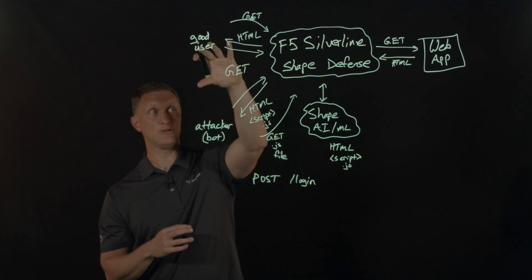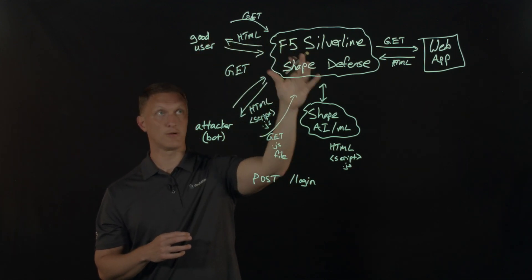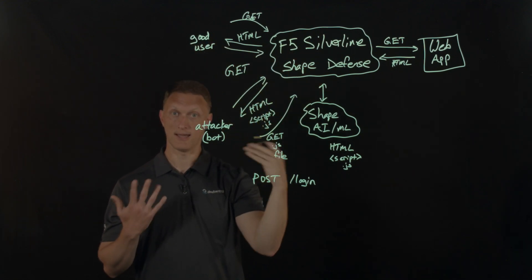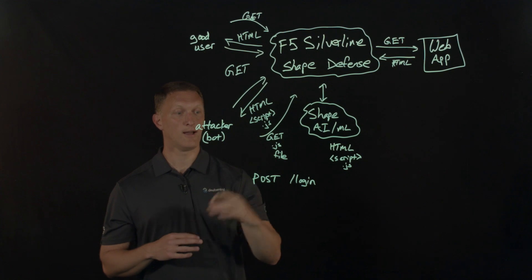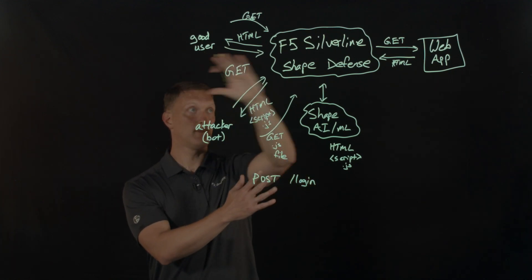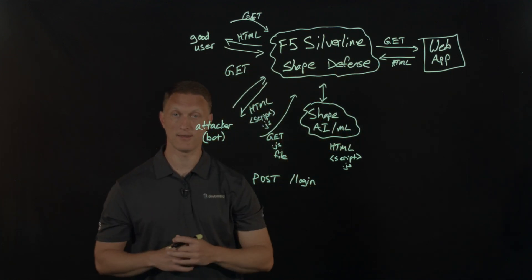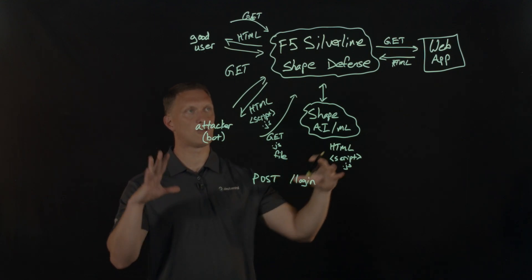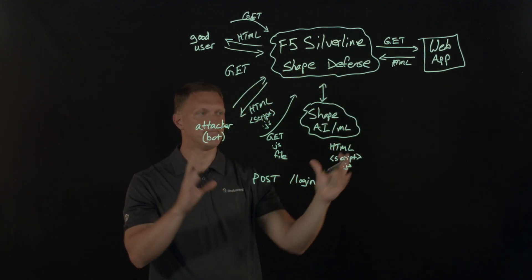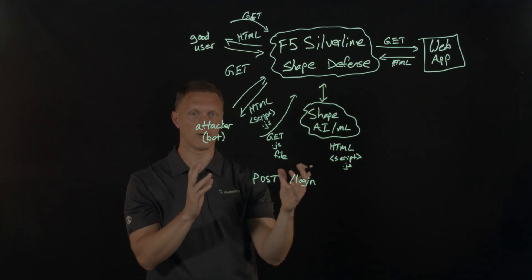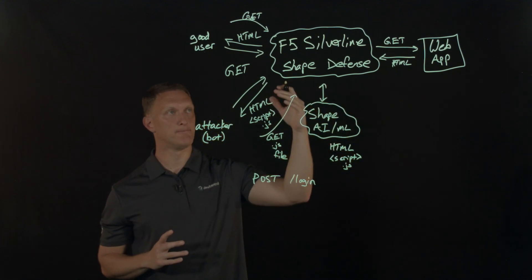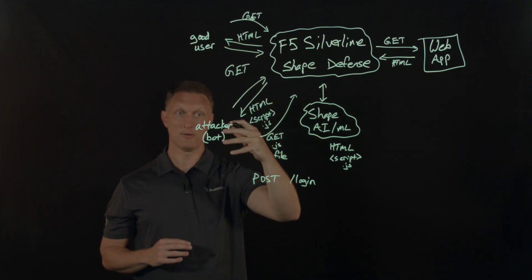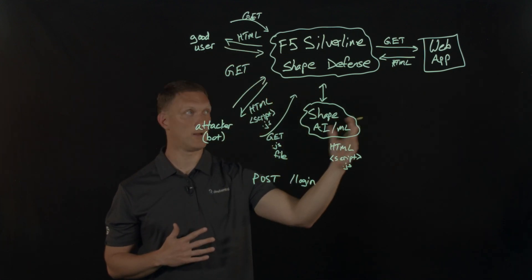For a good user, if the request comes in and the end user has been determined to be a legitimate human user, they would just get right through and interact with your web application like they're supposed to. This whole feature set and security capability is really all about determining if a good user or an attacker is trying to access your web application.